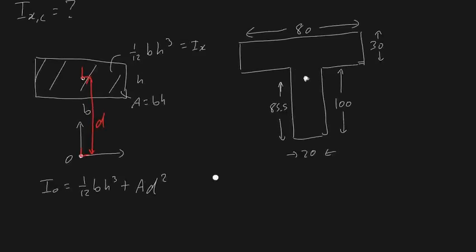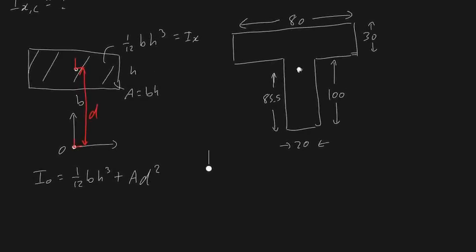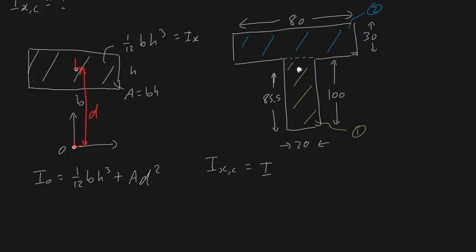Now that we've done the revision, let's solve the problem directly. First, I'm going to split the T-bar into two rectangular bars — Bar 1 (the top flange) and Bar 2 (the vertical web). The total moment of inertia about the centroid equals the moment of inertia of Bar 1 about the centroid plus the moment of inertia of Bar 2 about the centroid. We calculate each separately, then add them.